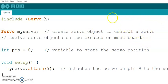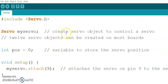#include servo.h tells Arduino IDE that you are going to use the servo library. If you don't include this as your first statement, you cannot use servo-related commands in your program. It is a mandatory task to include the library if you are going to use functions from that particular library.